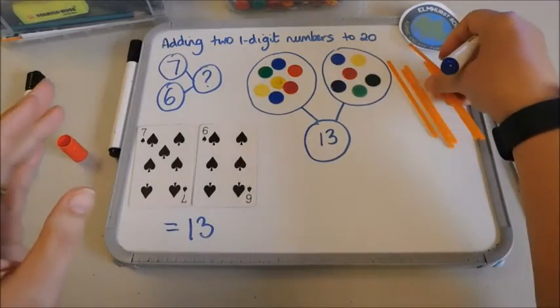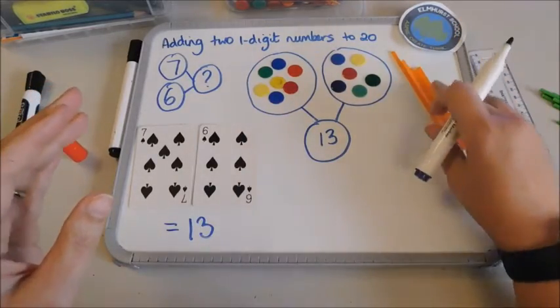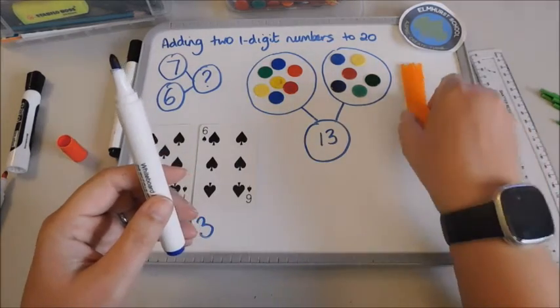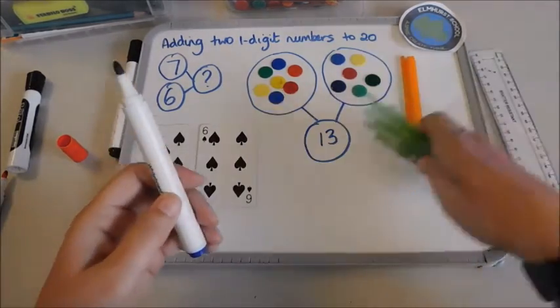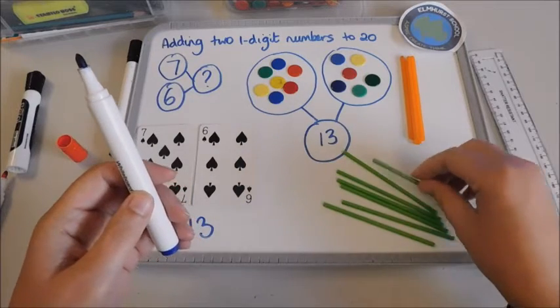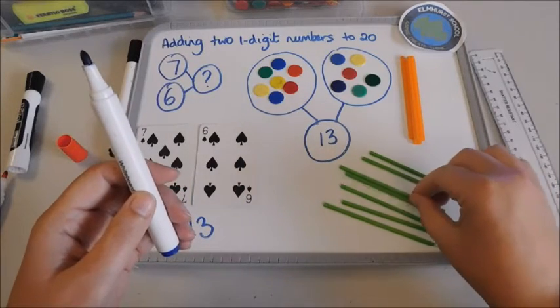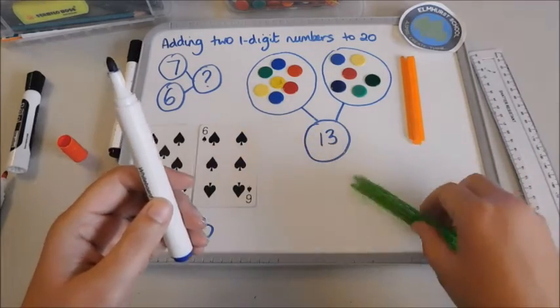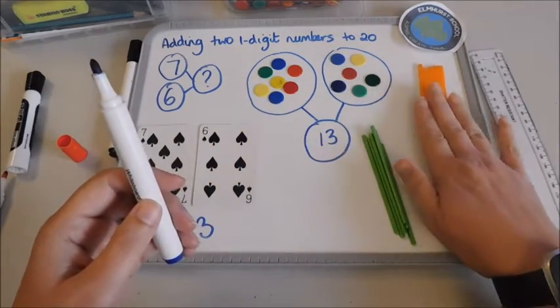Sometimes in school we use these plastic sticks as well, and then we can make bundles. So you can see I've got one, two, three, four, five, that's my six there. And then I can use a different color: one, two, three, four, five, six, seven.